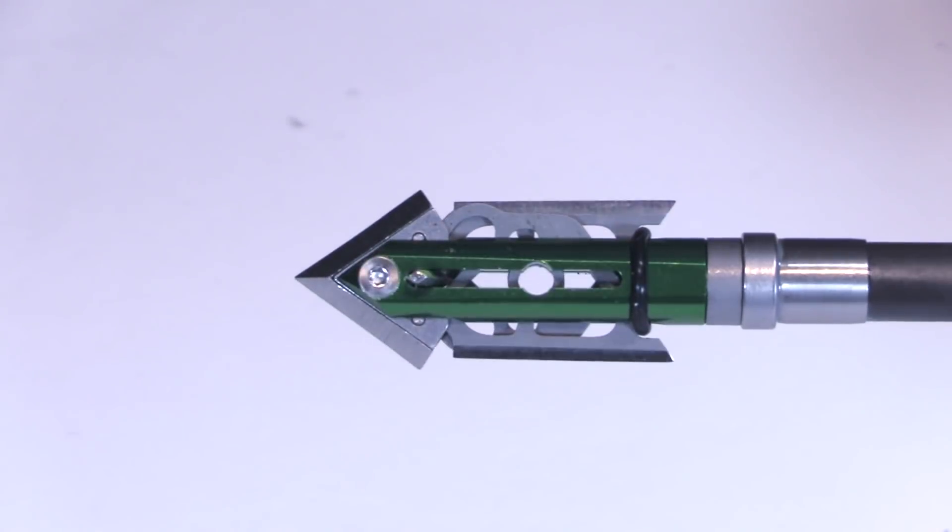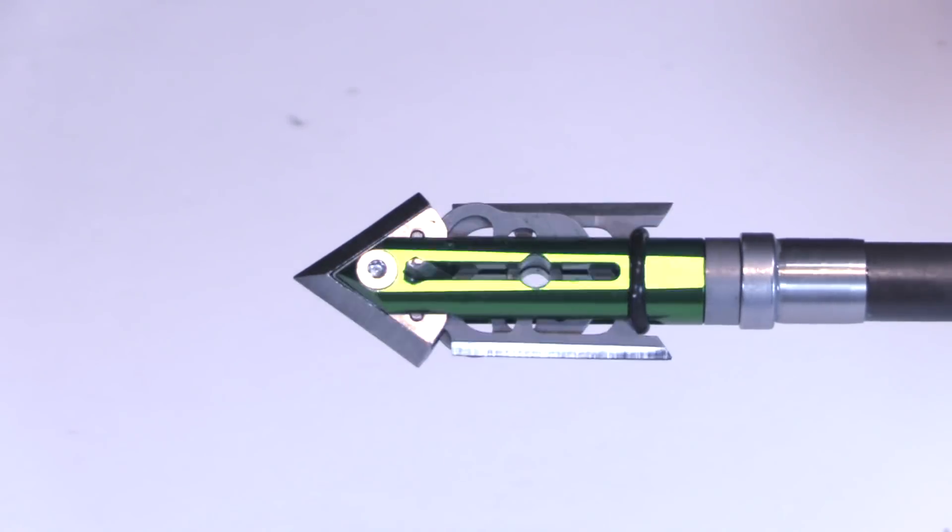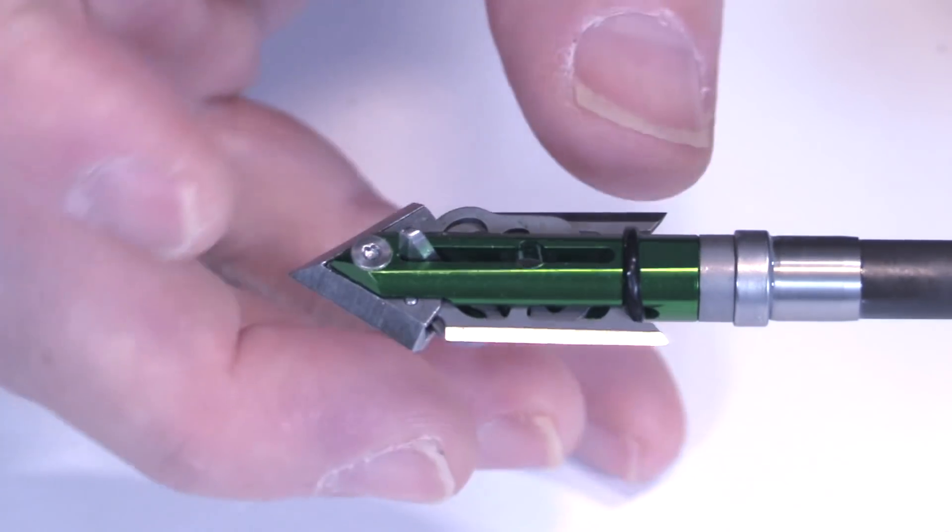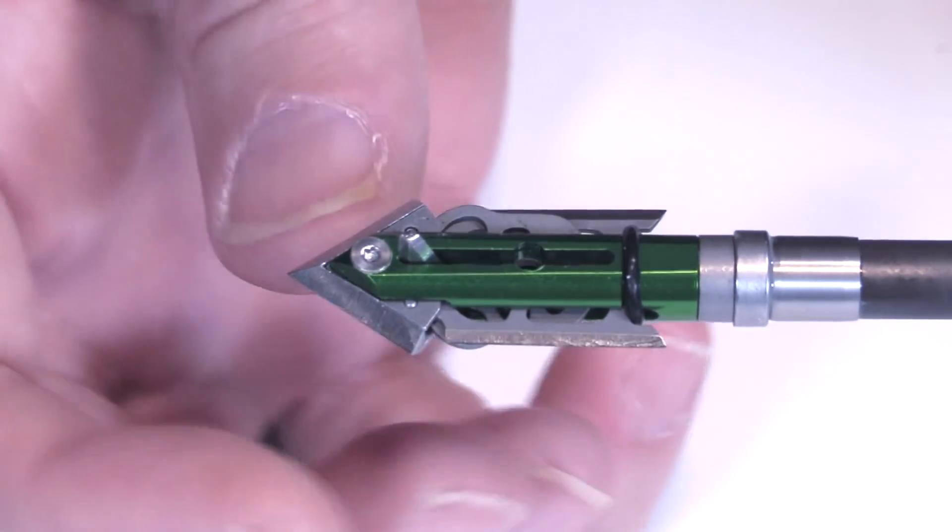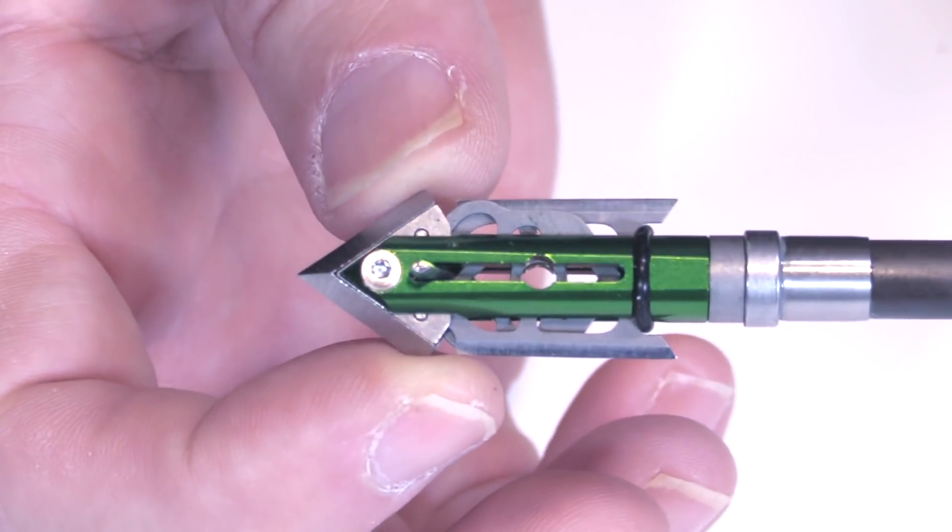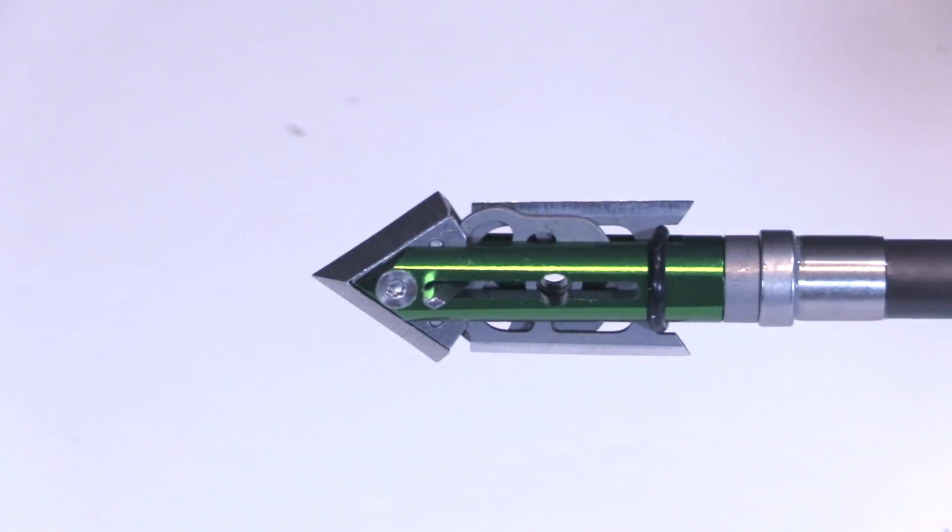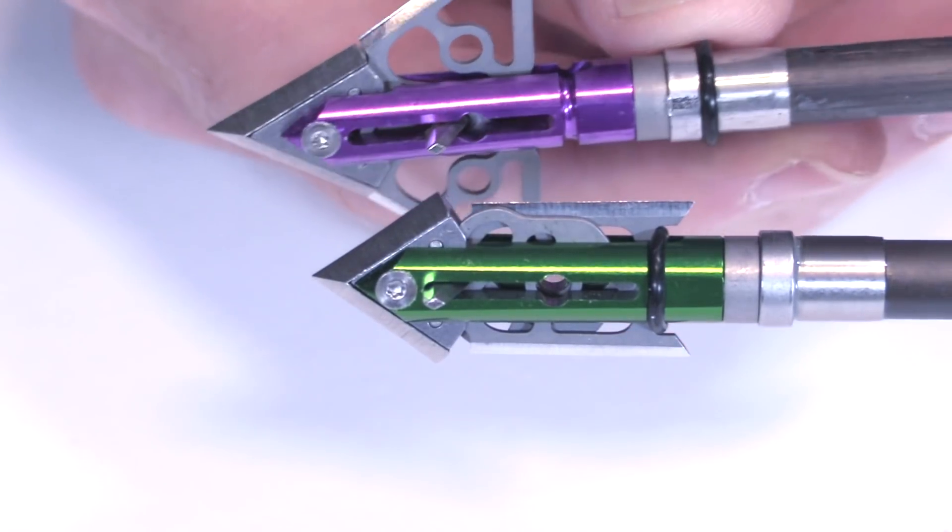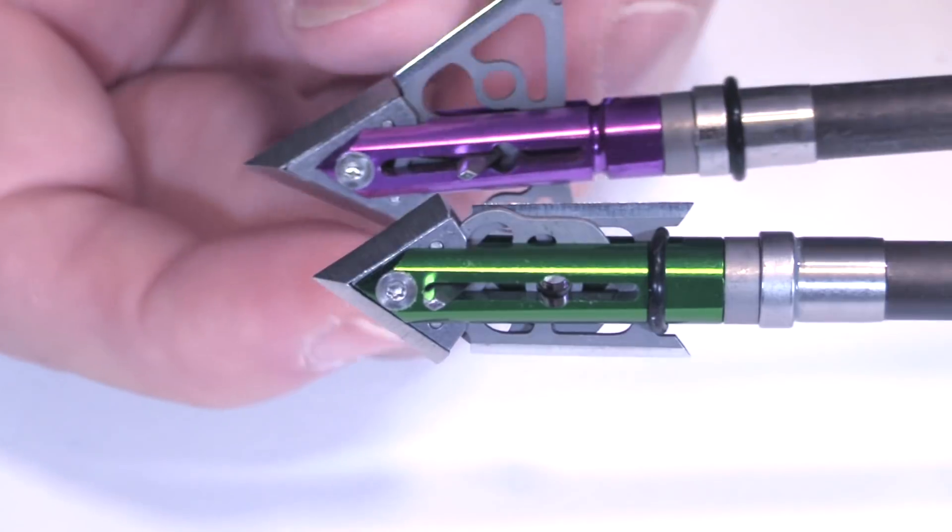And here for comparison is the K2 mini. So it looks really similar although it's green. But the difference is the K2 has a different tip. This is their K2 tip that's on their other hybrids. And this on the hybrid X is their EXT tip.